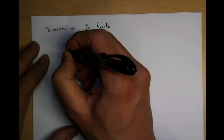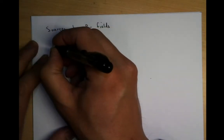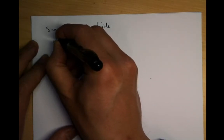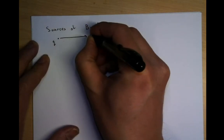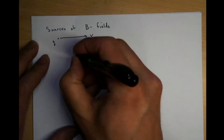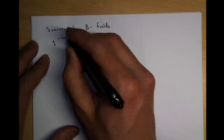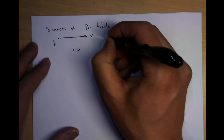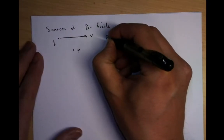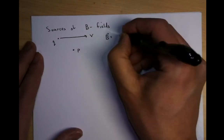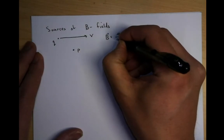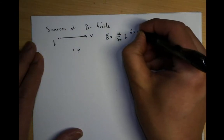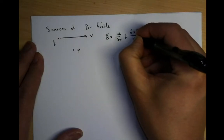A B field is essentially sourced by a moving charge. Let's imagine that I have a charge Q moving in this direction with some velocity V. I want to measure the magnetic field that this charge will generate at point P. B is equal to mu naught over 4 pi, Q, V vector cross r hat over r squared.